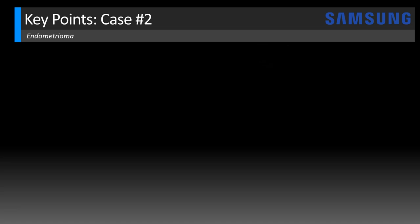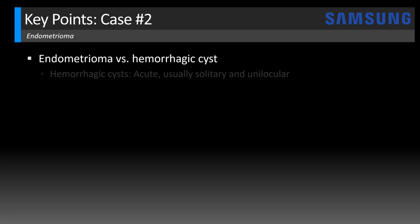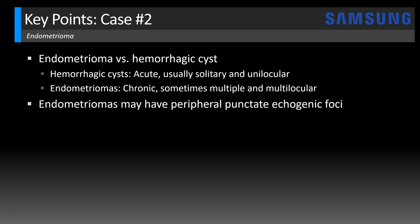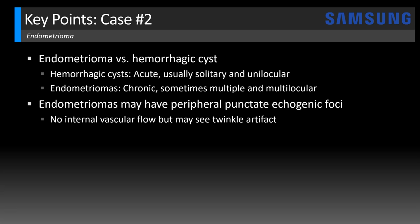Let's briefly review key points for case number two. How do you differentiate endometriomas and hemorrhagic cysts? Hemorrhagic cysts will have that reticular pattern of fine thin intersecting lines. They tend to be acute, resolving within 8 to 12 weeks, and are usually solitary and unilocular. Endometriomas, on the other hand, will be chronic — persisting beyond that initial follow-up for years — and can sometimes be multiple or multilocular. Endometriomas can also have peripheral punctate echogenic foci with no internal vascular flow, though you may see twinkle artifact. In this case the peripheral echogenic areas were more irregular, almost like mural nodularity, but had no internal vascularity, and at surgery this mass proved to be a benign endometrioma.